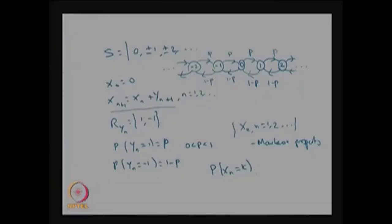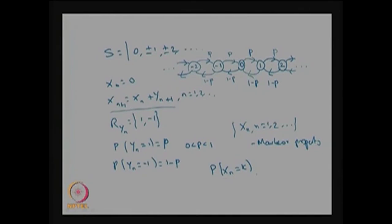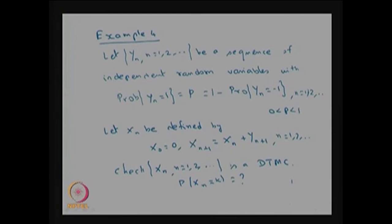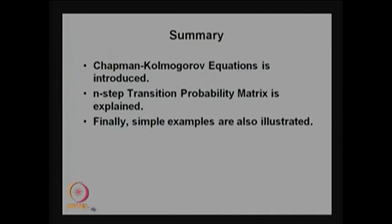By knowing the initial probability vector and the one-step transition probability matrix or state transition diagram, we can obtain the distribution of xn for any n. In this lecture we discussed the Chapman-Kolmogorov equation and the n-step transition probability matrix, which can be computed as P^n from the one-step matrix. We also discussed four simple examples illustrating the Chapman-Kolmogorov equation and the n-step transition probability matrix.